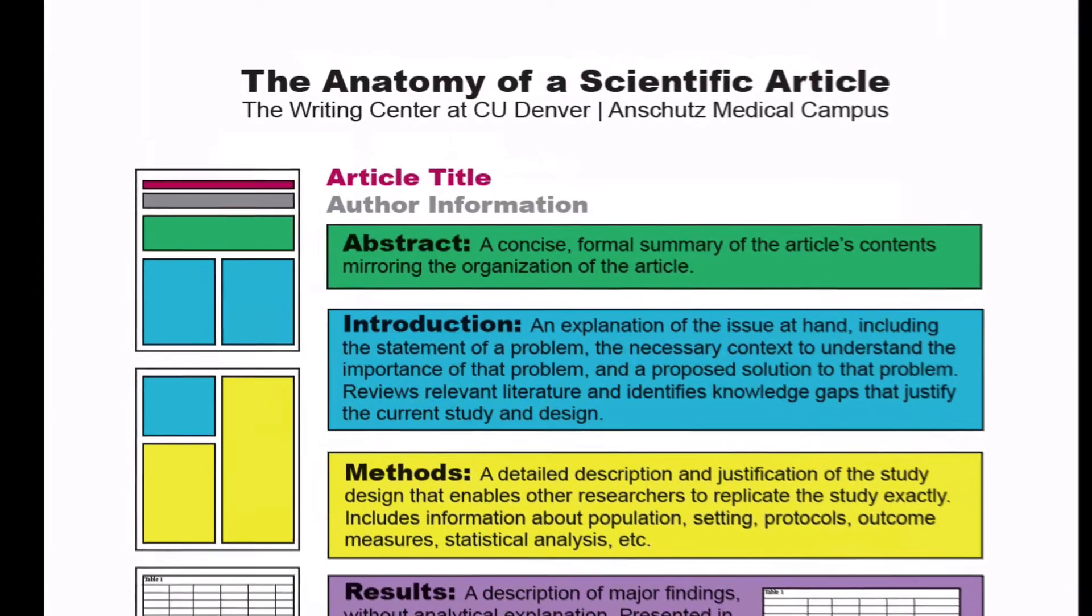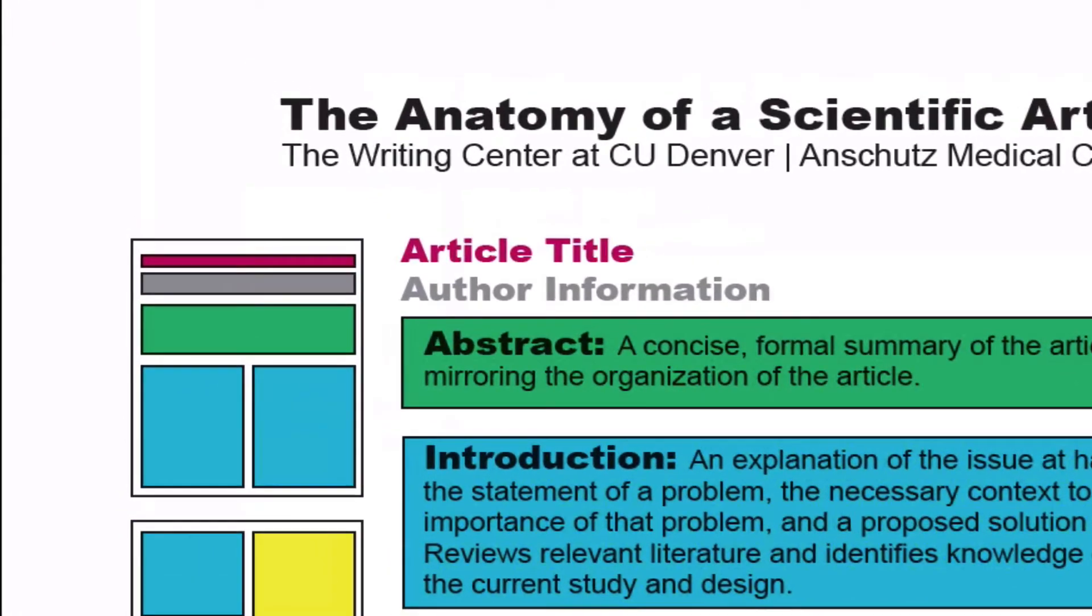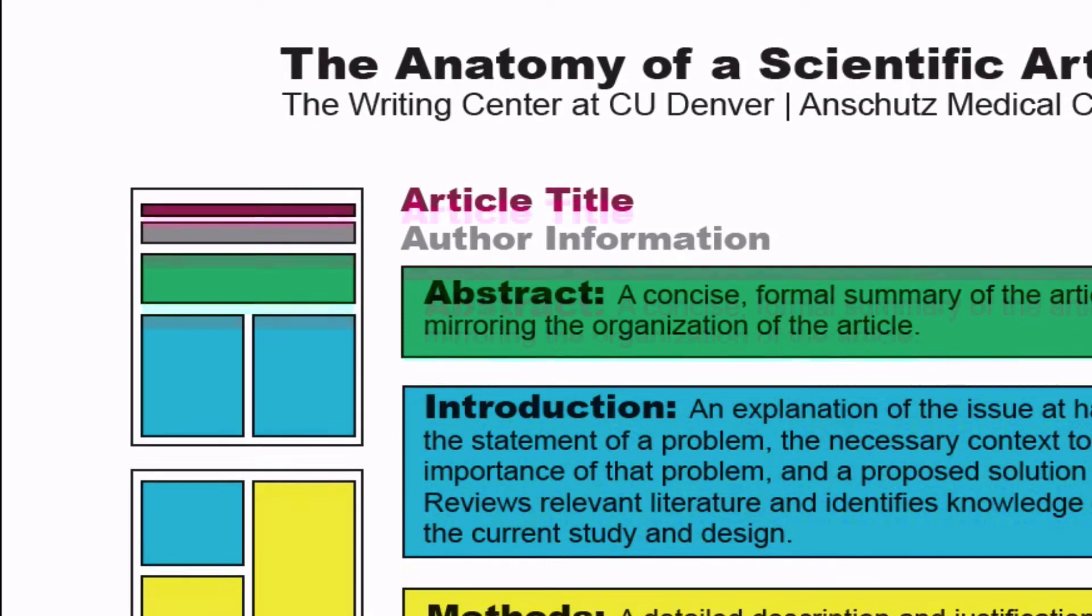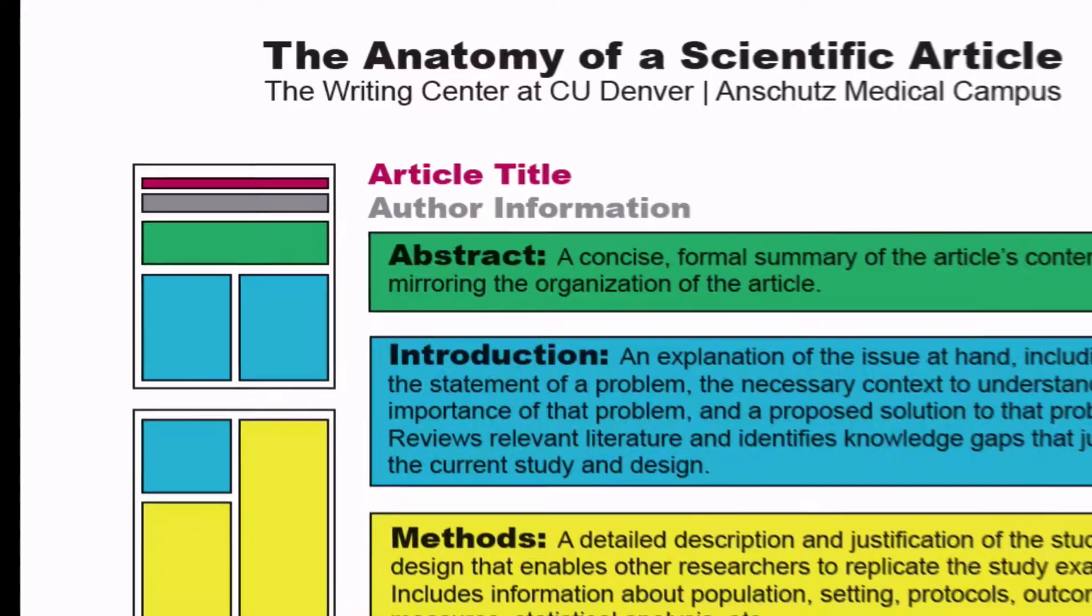All scientific articles begin with titles designed to be accurate, concise descriptions of the article's content and findings. Above or beneath the title, you'll find author information, including names, professional qualifications, institutional affiliations, and sometimes contact information.